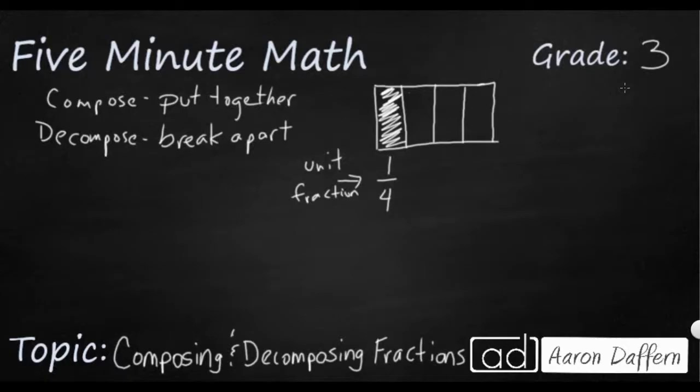But if I were to take this next portion right here, shade this in, this would also be one-fourth. And let's say I wanted to shade in this third portion over here. Now I've got another one-fourth. So if you put these three portions together, we have a larger fraction of three-fourths. This rectangle is broken up into four parts, and three of them are shaded.